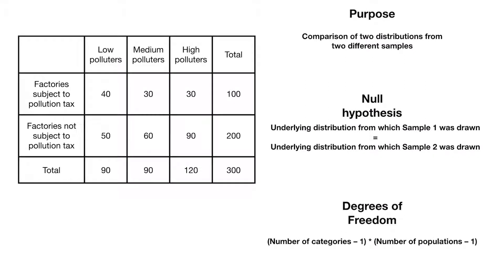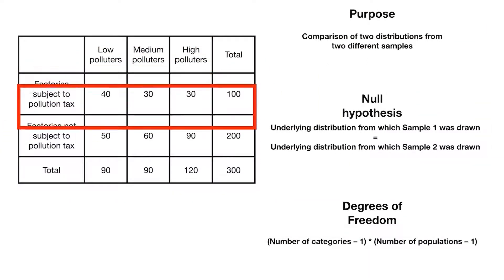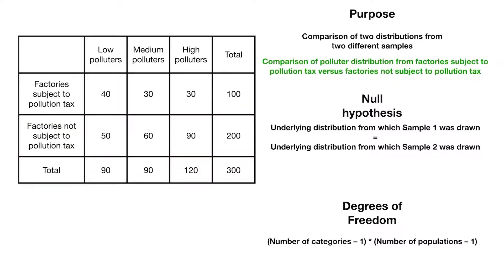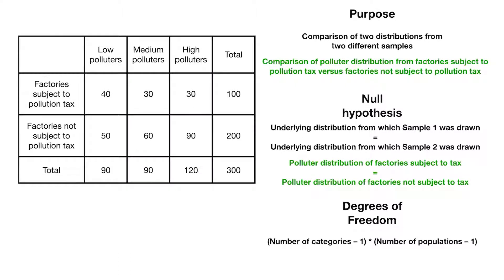So let's do an example. Let's say we have two samples from two different populations: factories that have been subject to some new pollution tax, and factories that haven't been subject to that tax. Our purpose is to compare the distribution of polluters from factories subject to that tax versus factories not subject to that tax. Our null hypothesis is that the polluter distribution of factories subject to the tax is equal to the polluter distribution of factories not subject to that tax.